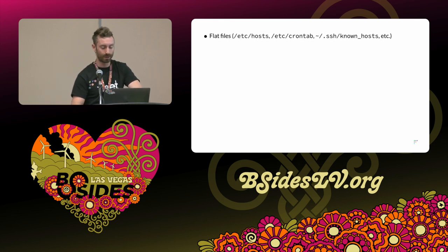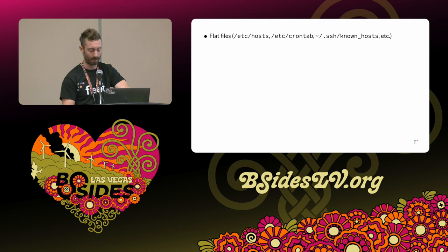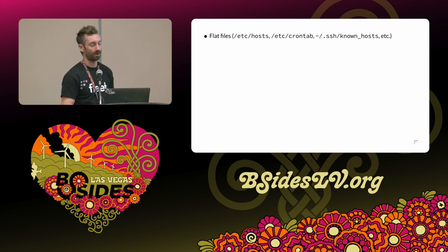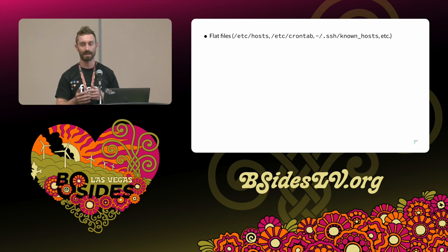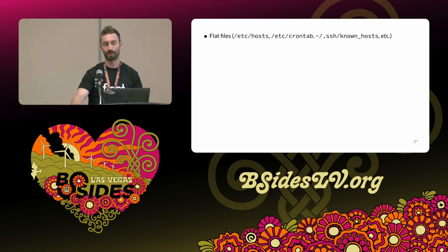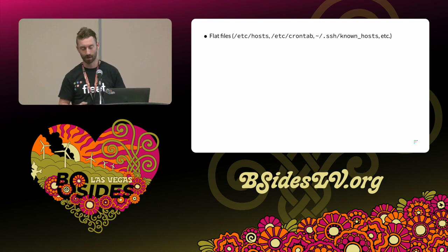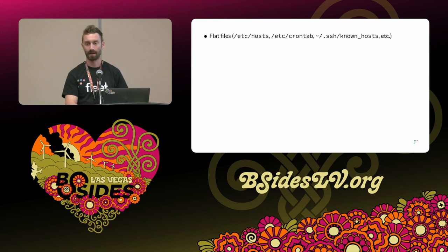There's a huge number of data sources — something like 300 different tables across all of the operating systems. So you can get data from flat files like /etc/hosts or /etc/crontab, the known hosts files. Each of these has its own table in OS Query. Instead of having to write that parsing logic, you just write select star from /etc/hosts, select star from crontab, select star from known_hosts, and OS Query gives this to you in that normalized format.